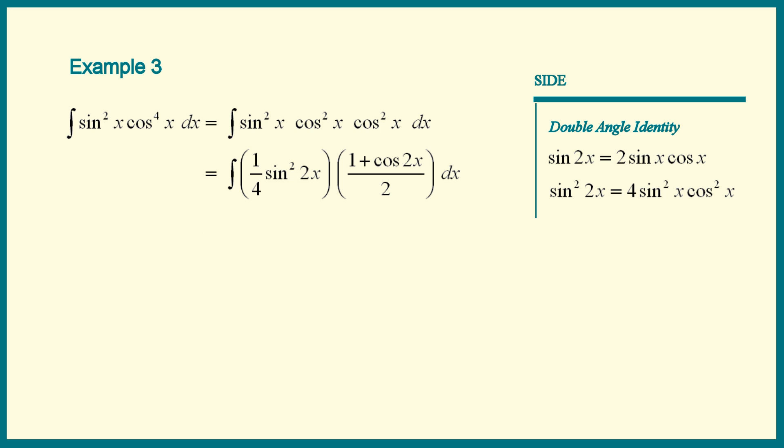Okay, let's pull out the 1 8th. Now what? Our only option is to multiply everything out. We get sine squared of 2x plus sine squared of 2x times cosine of 2x dx.